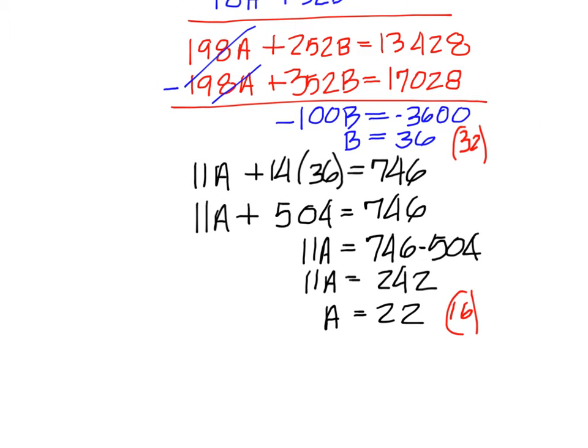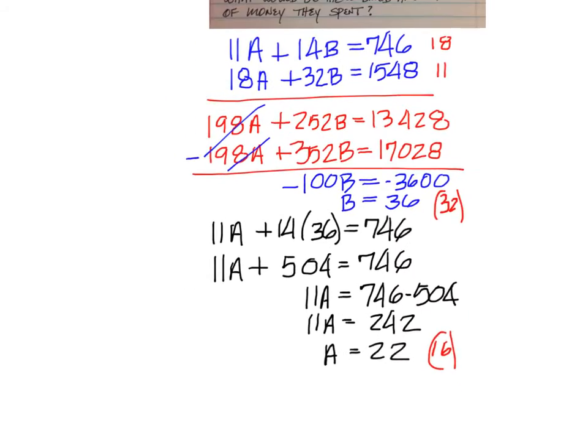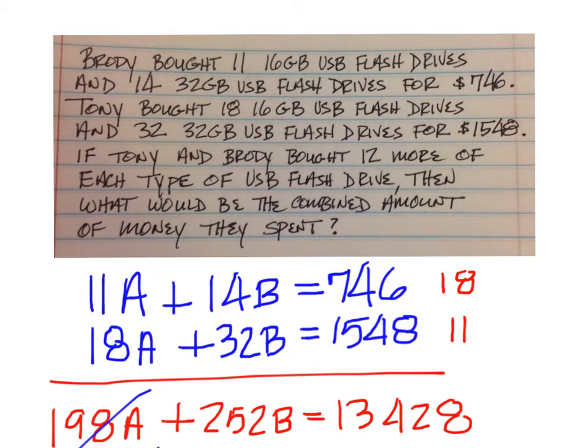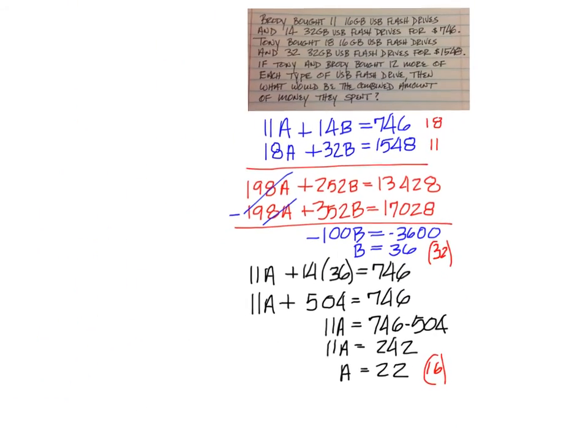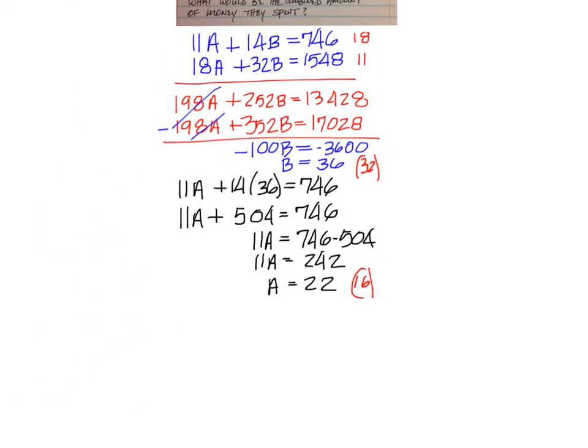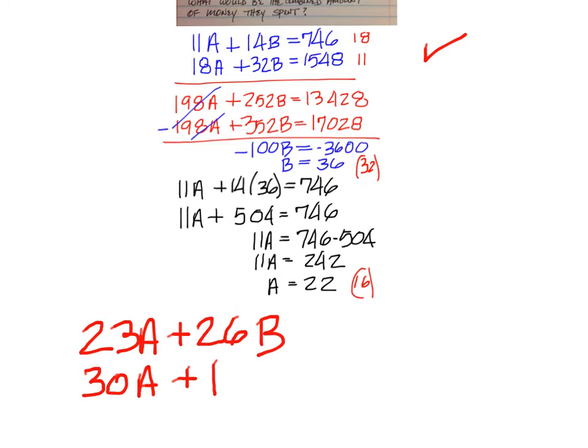Now we have to go back and look at the main problem. If Tony and Brody bought 12 more of each type of USB flash drive, what did they spend altogether? So 12 more of each type is going to change the original amount. Instead of 11A, you're going to have 23A and then 26B. And then on the bottom one, you would have 30A and then plus 44B.